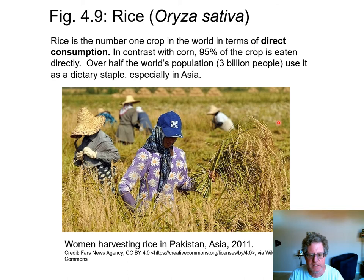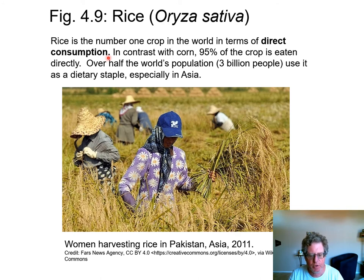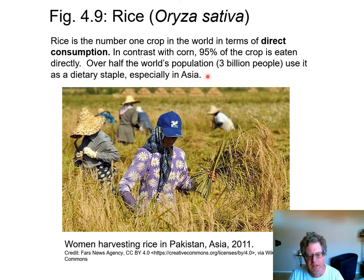Now we're on to rice. Rice is also in the grass family, and it provides the most calories directly to people worldwide. A lot of corn calories come indirectly when you eat hamburger, eggs, or milk. About 95% of the rice crop is eaten directly. Over half the world's population — 3 billion people — use it as a dietary staple, especially in Asia. About 85% of it is grown in Asia.